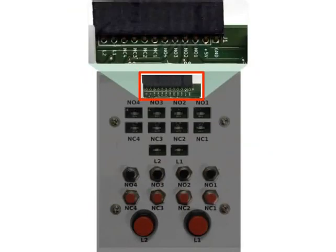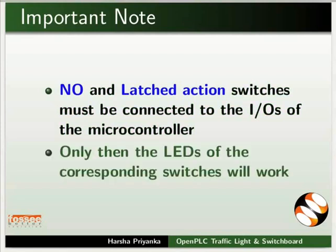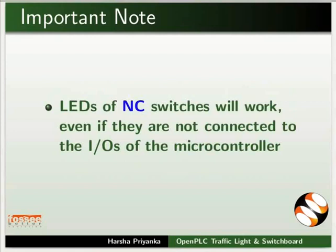Next, we will see the pins. Starting from the right, the first 2 pins are ground and 5 volts — these are the input power pins. Then we have 4 pins for 4 NO switches, 4 pins for 4 NC switches, and the last 2 pins are for 2 latched action switches. NO and latched action switches must be connected to the I/O pins of the microcontroller for the LEDs of those switches to work. LEDs of NC switches will work even without connection to the I/O pins.